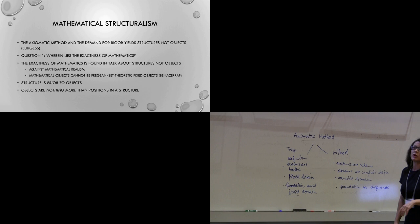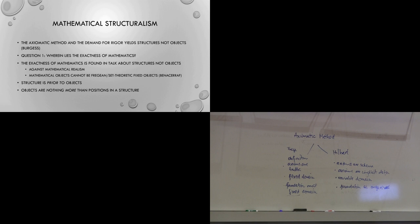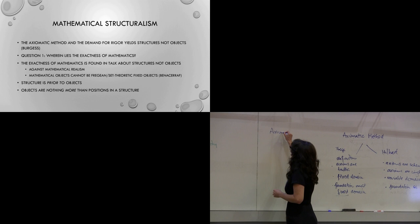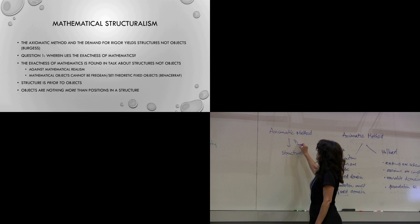The axiomatic method and the demand for rigor yield structures and not objects — this is really worked out in great detail in Burgess's recent book. So in answer to the question where lies the exactness of mathematics, we've got that the exactness of mathematics is found in talk about structures, not objects. So we've got the axiomatic method, and from this we get that we get structures as opposed to objects — and again, that's worked out by Burgess.